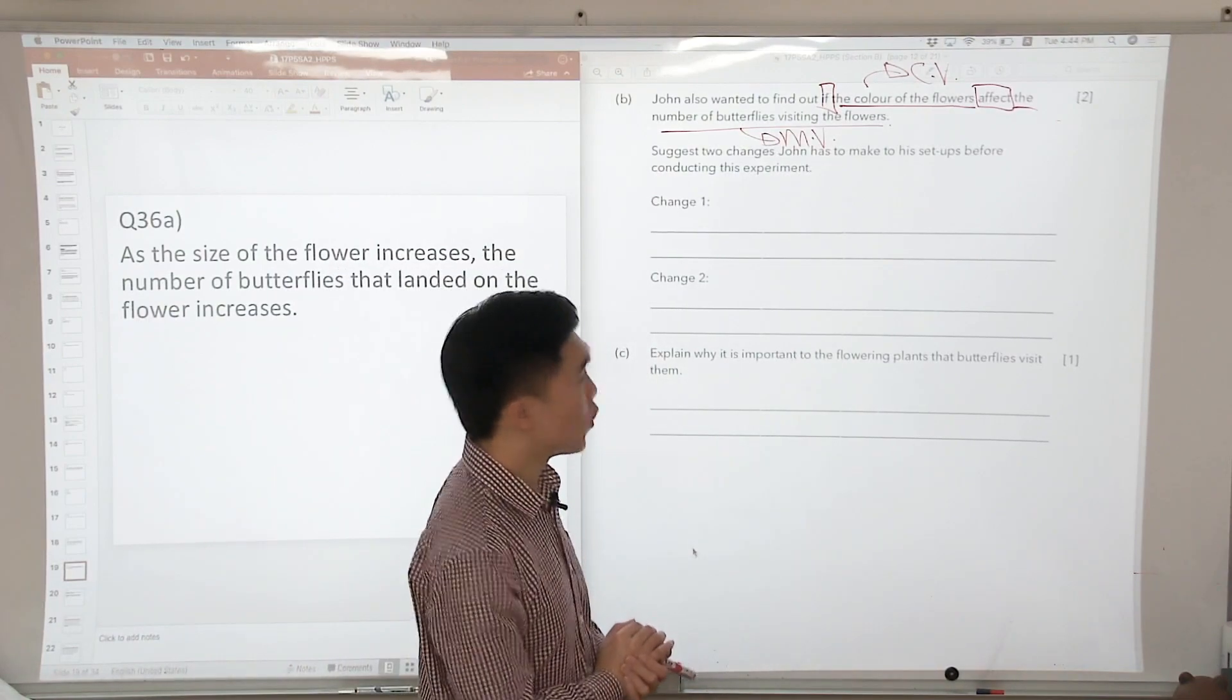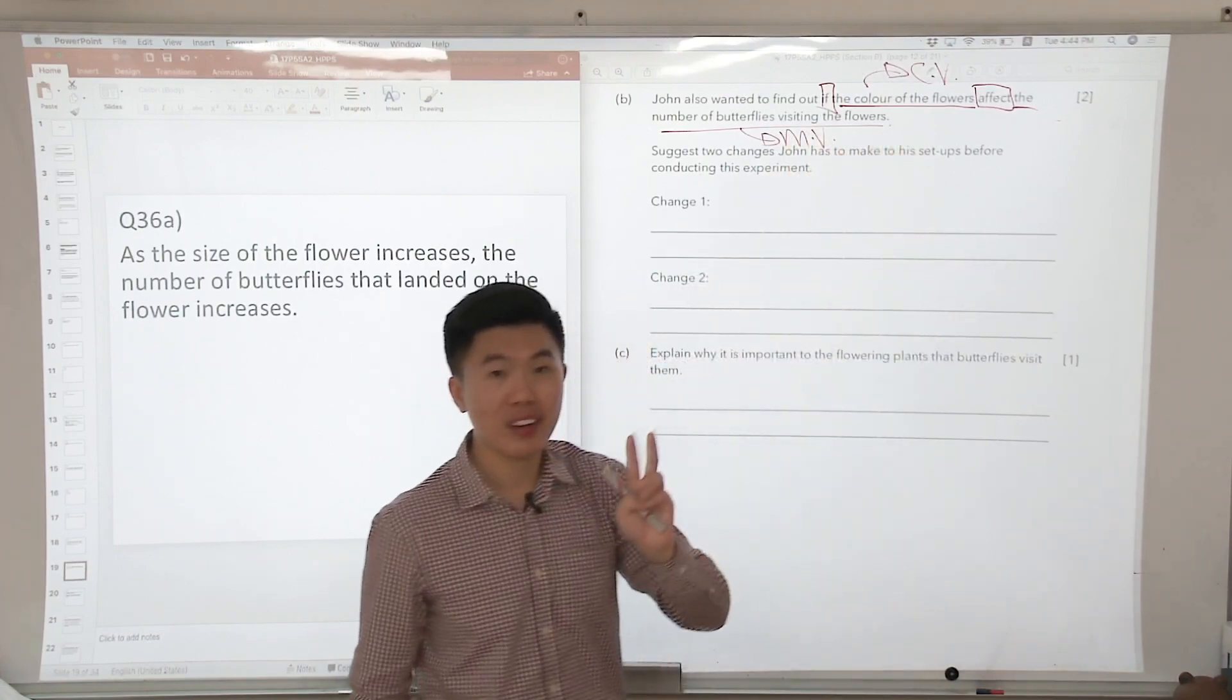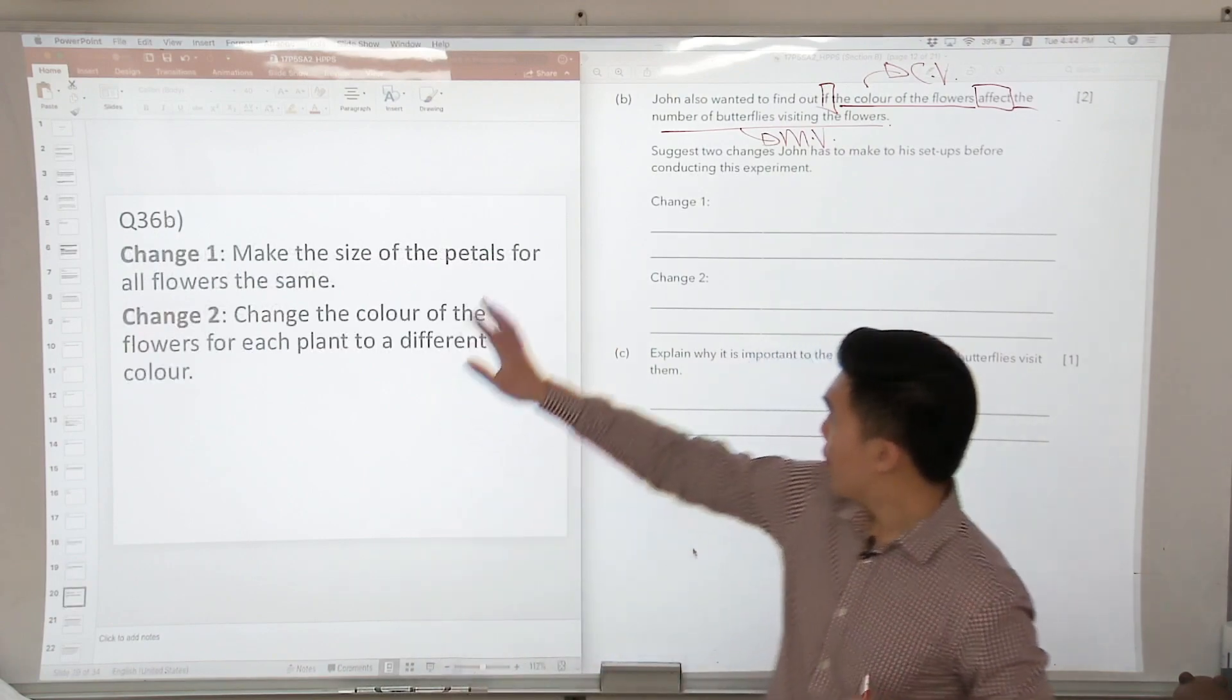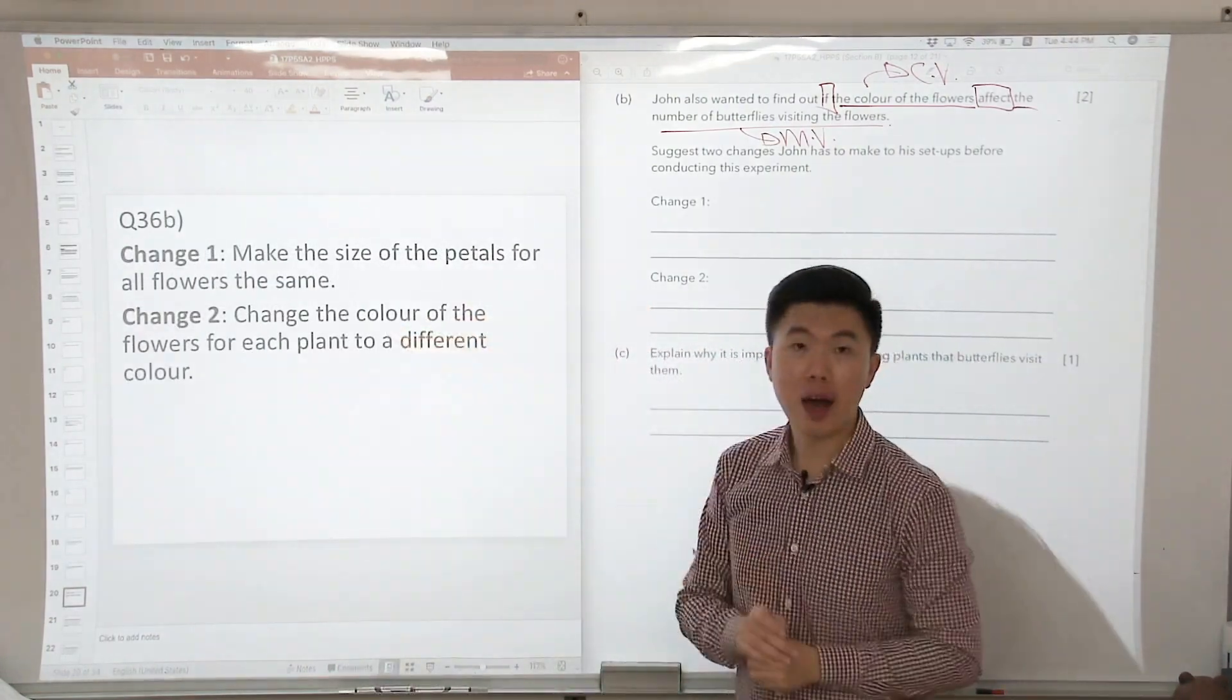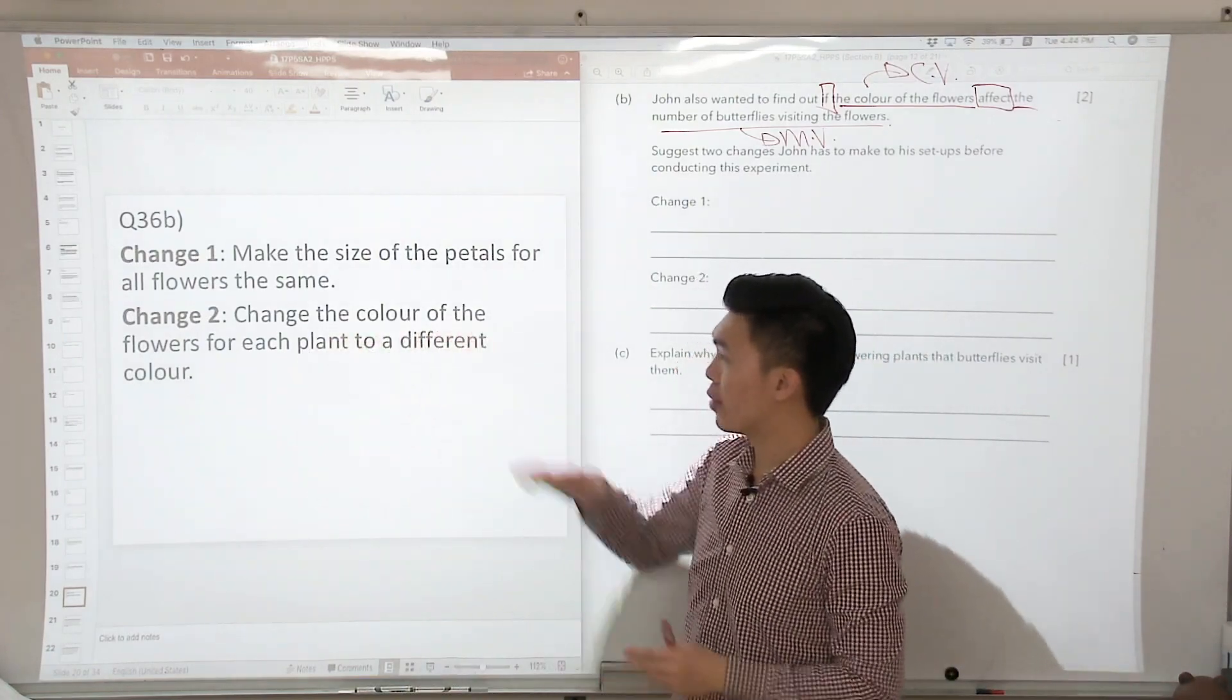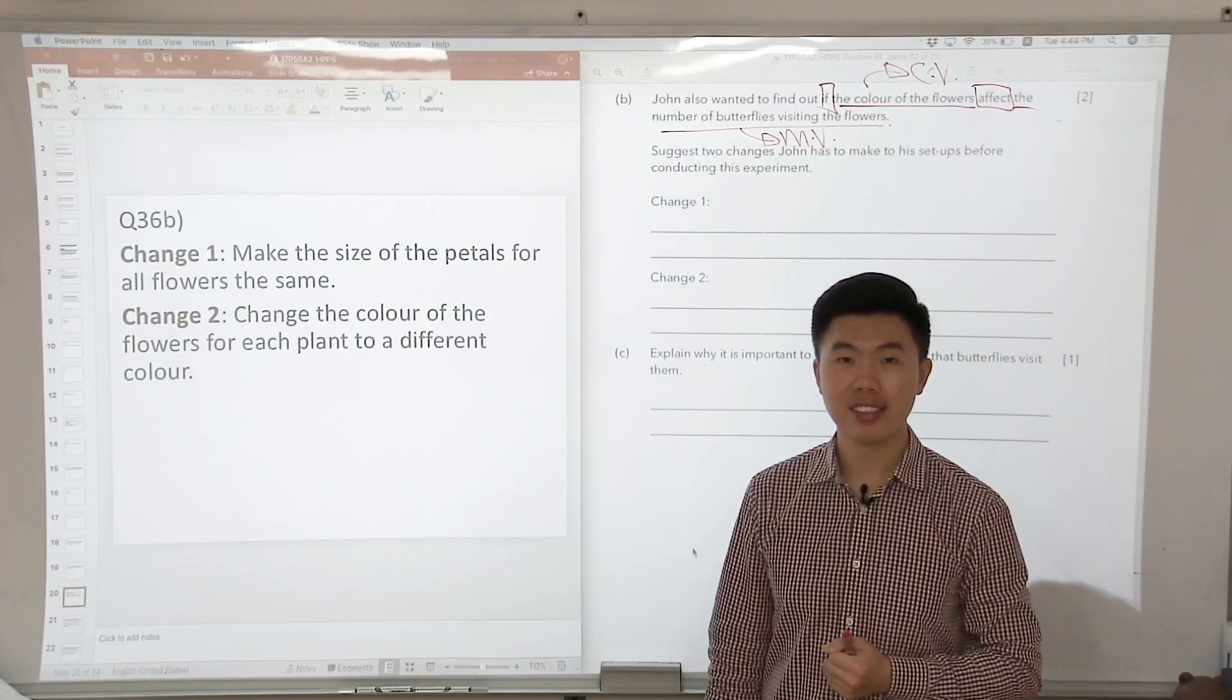But we must make sure also that the color of the flowers are now different. So these are the two things that we're going to do: make the size of the petals for all the flowers the same, and change the color of the flowers for each plant to a different color.